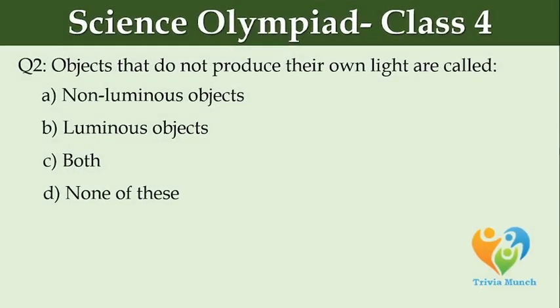Objects that do not produce their own light are called dash. Option A: non-luminous objects. Option B: luminous objects. Option C: both. Option D: none of these.